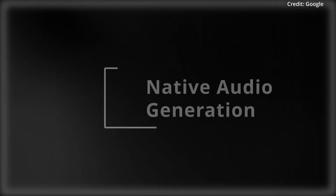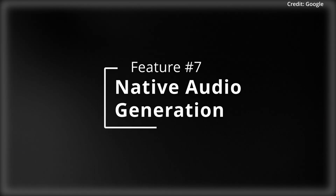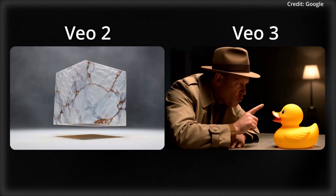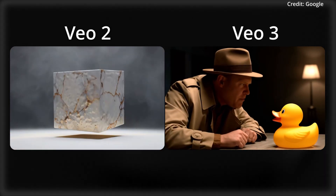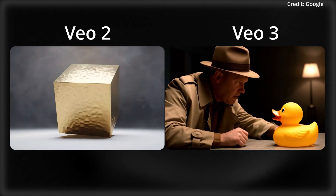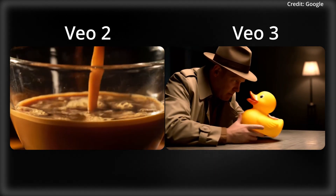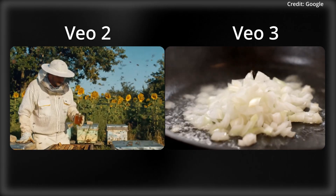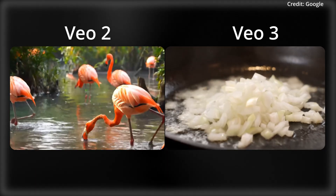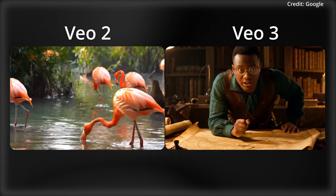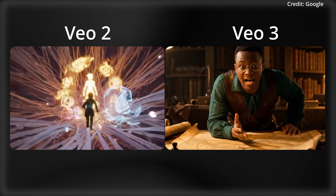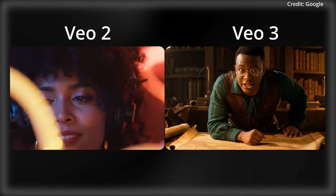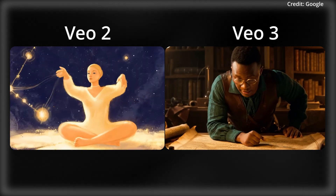Next, there's native audio generation. Unlike VO2, which generated only silent videos, VO3 finally incorporates all kinds of audio according to text prompt. This includes sound effects, ambient noise, and dialogue that aligns to its visuals. And you can include a serious amount of detail for the audio, just like this.